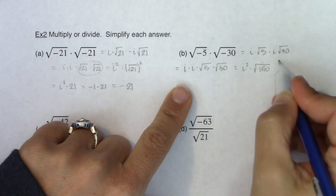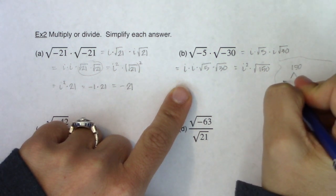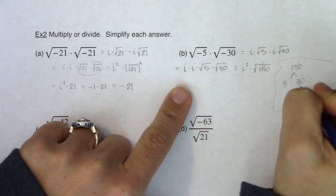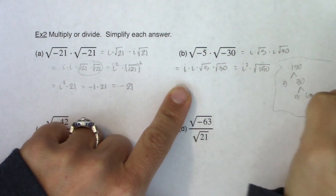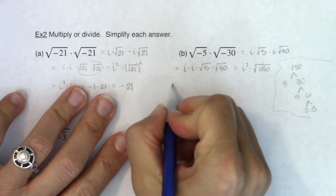Let me do some work off to the side here. Let's see if we can break down 150. I know 150, we just did it into 5 and 30. 30 can break into 5 and 6 and 6 can break into 2 and 3.